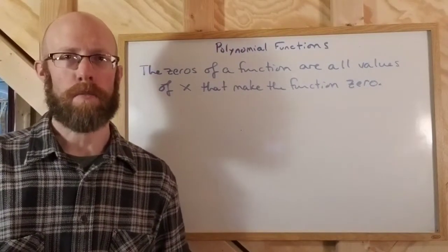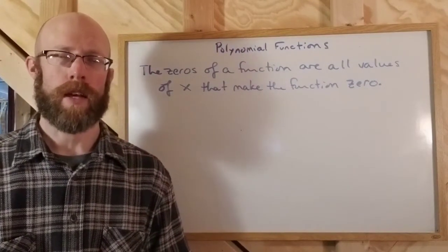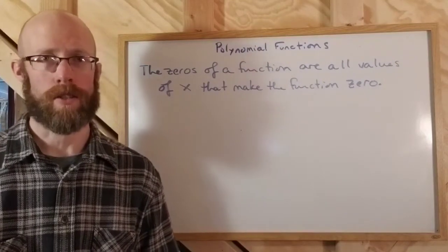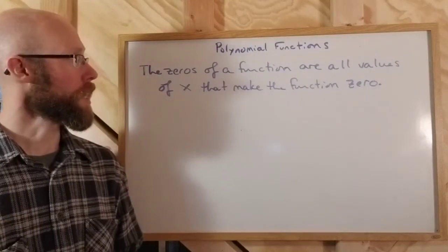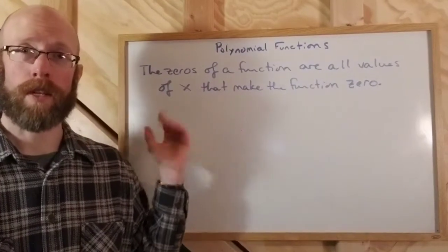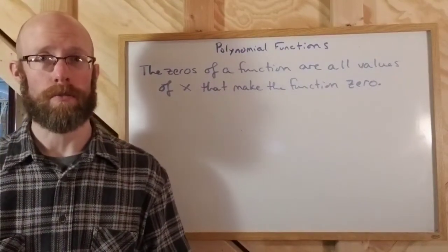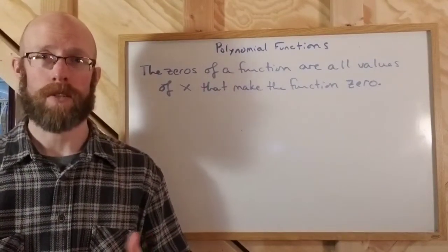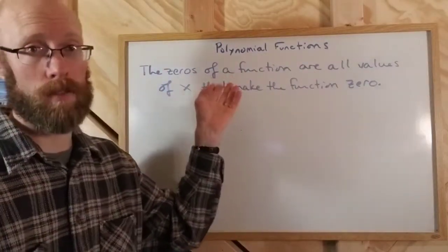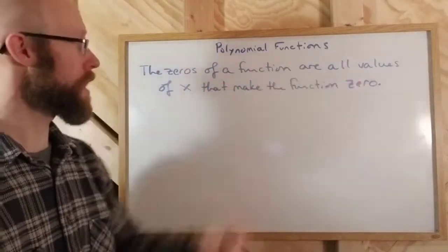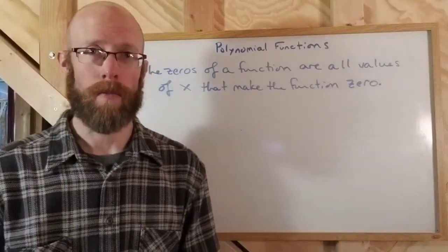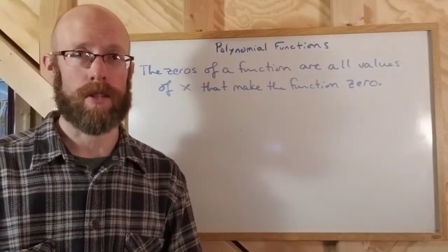Now that we've looked at end behavior and some of the power functions, we're going to look at other aspects of a polynomial, particularly the zeros of a polynomial. Let's define what that means. The zeros of a polynomial function, or of any function for that matter, are all the values of x that make the function zero. That's why they're called zeros.